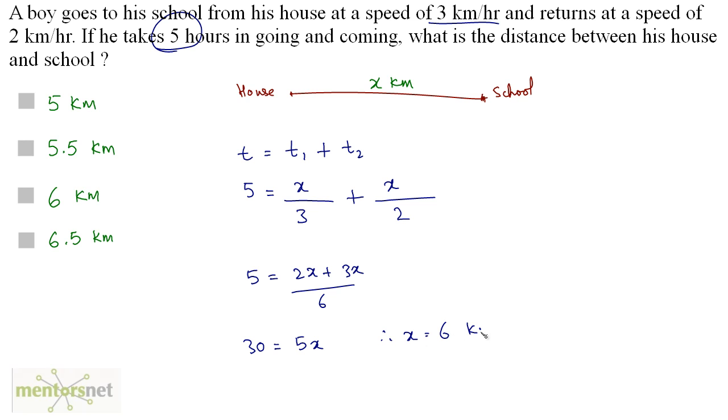Therefore x equals 30 by 5 which is 6. So 6 kilometers is the distance between the house and the school. Option C.